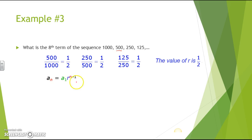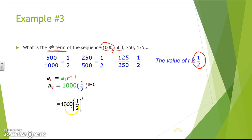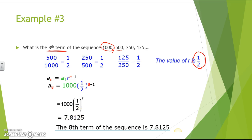Using the geometric sequence formula A of n equals A of 1 times r raised to the n minus 1 power: A of 1 is 1,000, r is 1 half, and n is 8. So A of 8 equals 1,000 times 1 half raised to the 8 minus 1 power, which simplifies to 1,000 times 1 half to the 7th. The final answer is 7.8125, so the eighth term of the sequence is 7.8125.